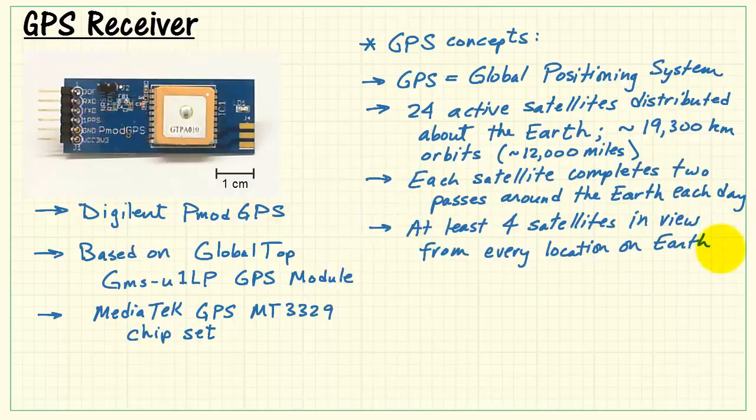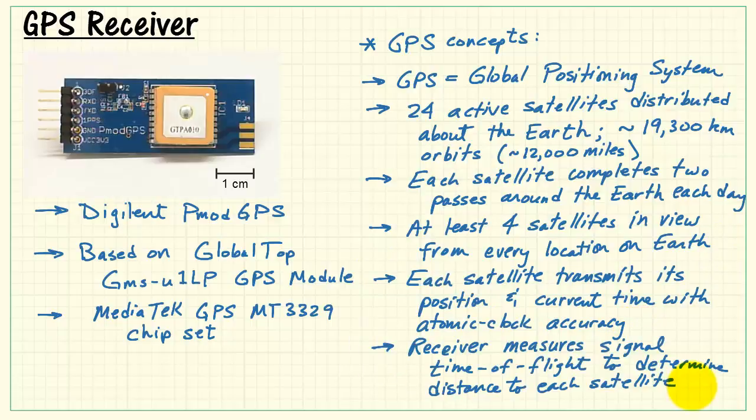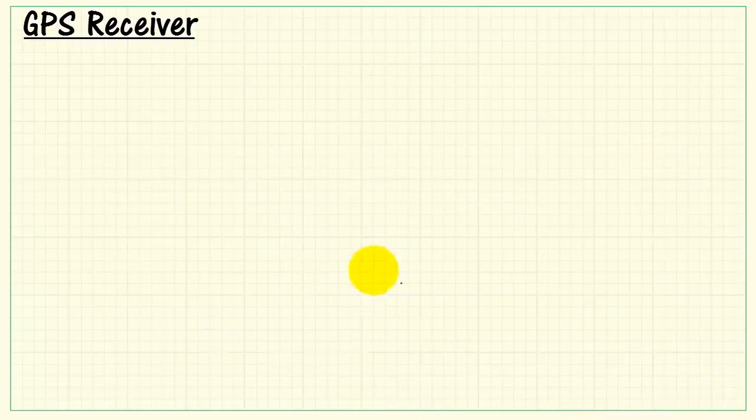Each satellite completes two passes around the Earth every day, and at least four satellites are in view from every location on Earth. Each satellite transmits its position and current time with atomic clock accuracy, and the receiver measures the time of flight of the signal to determine its own distance to each satellite. From there, trilateration is used to determine the receiver's location.